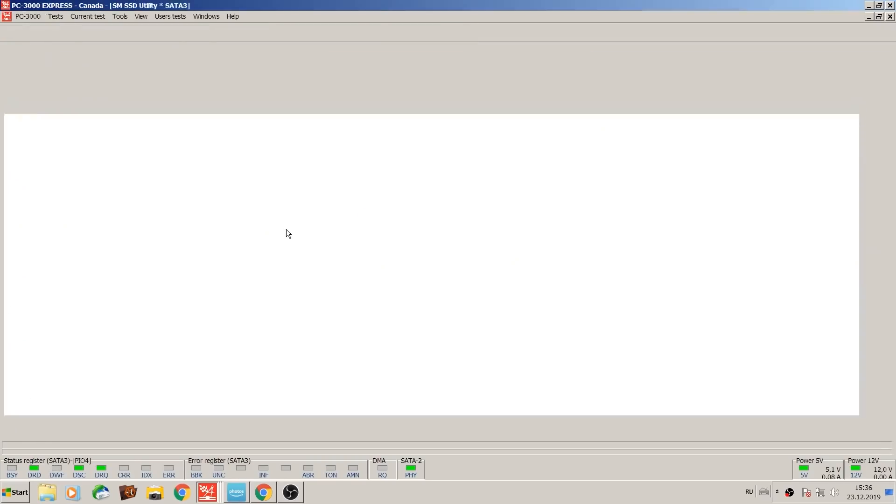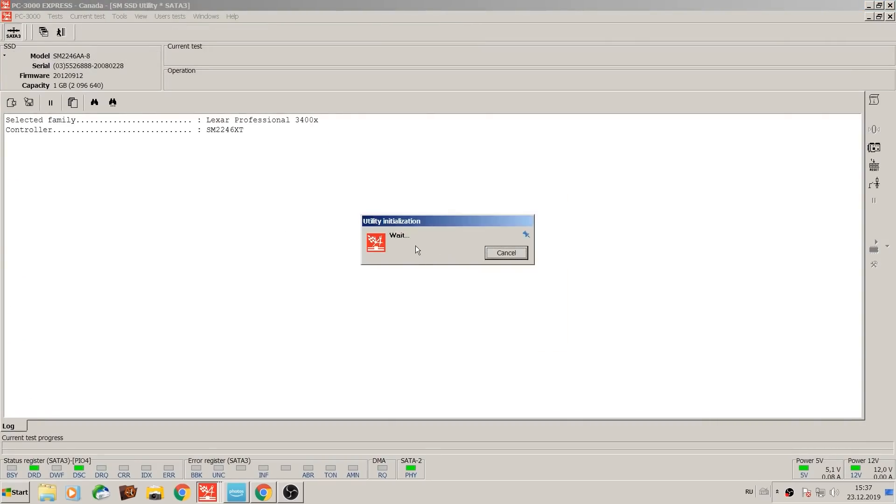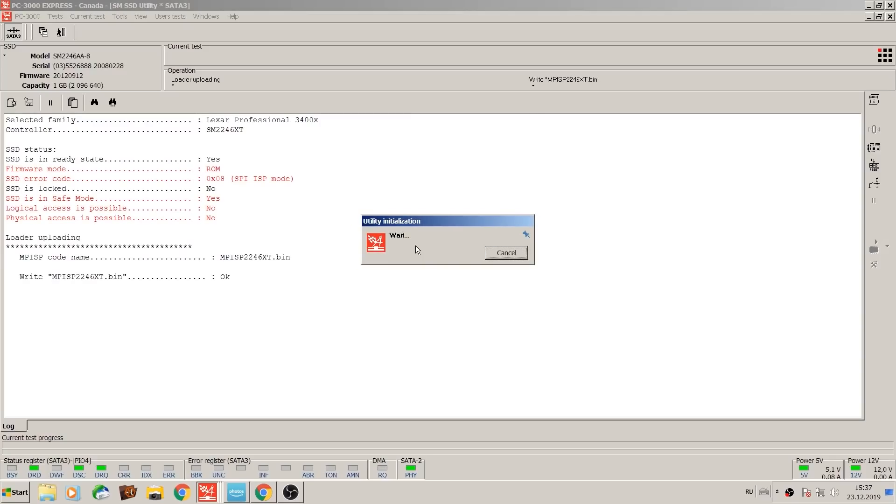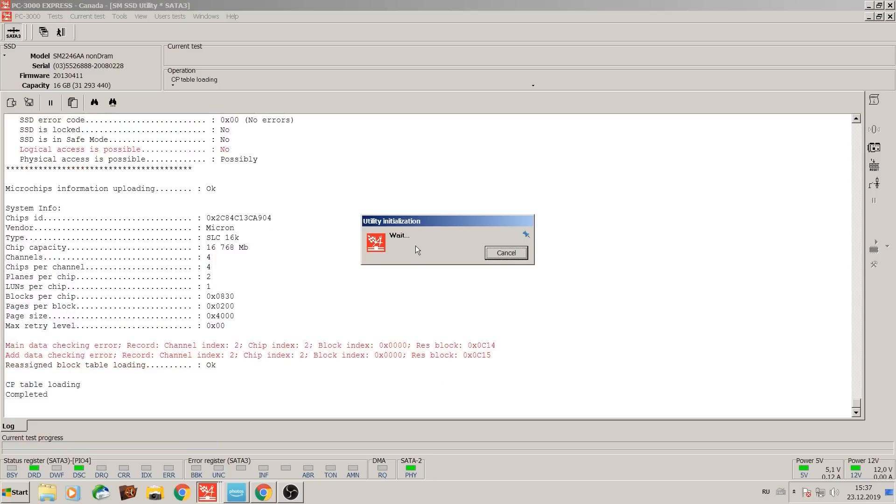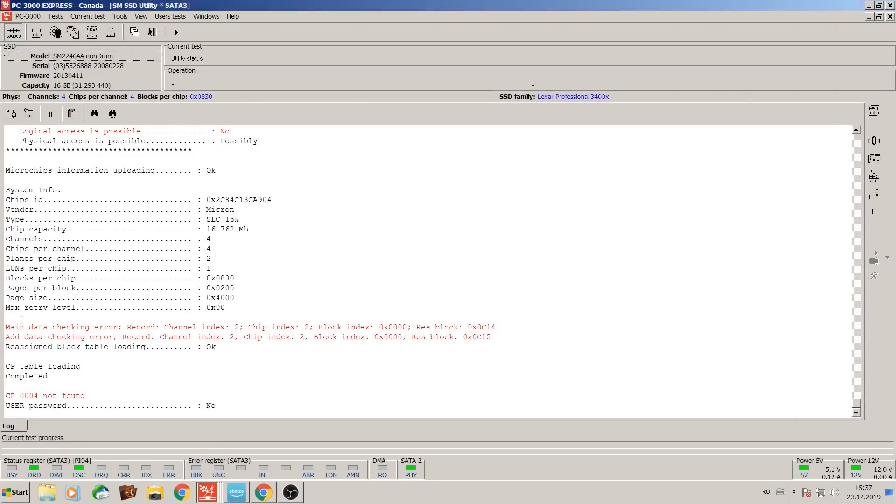Going into the utility, we're going to pick a Lexar utility, select our card. And as you can see, the card gives us safe mode, indicating the controller part number. And it lets us in.